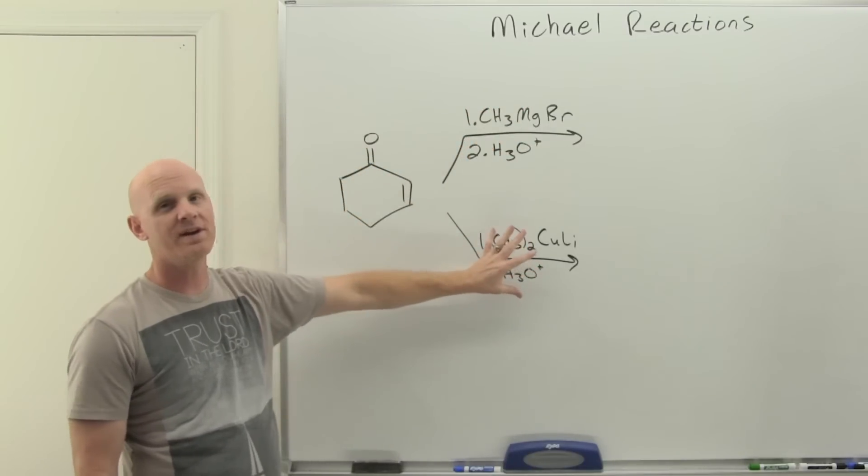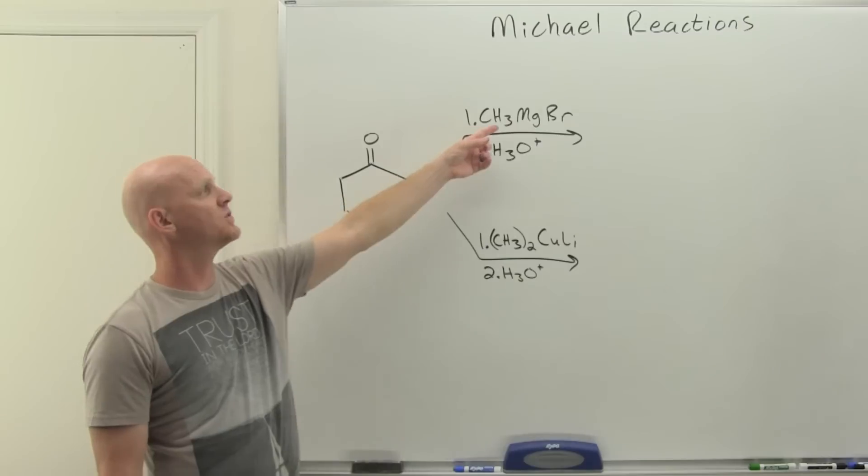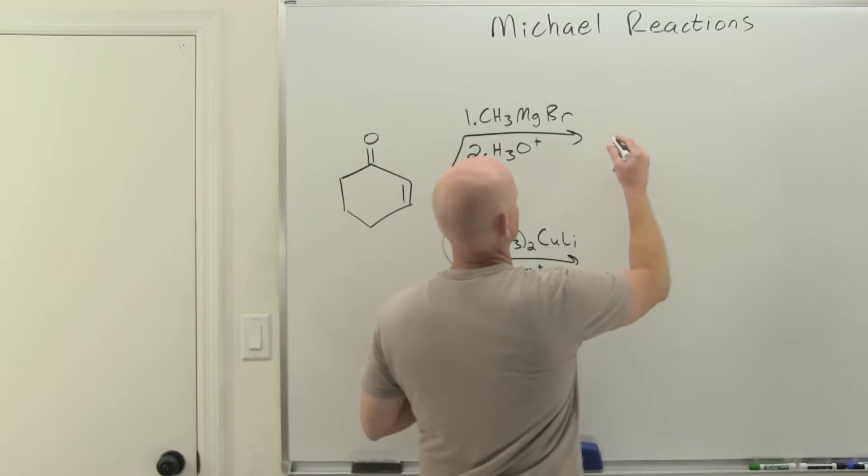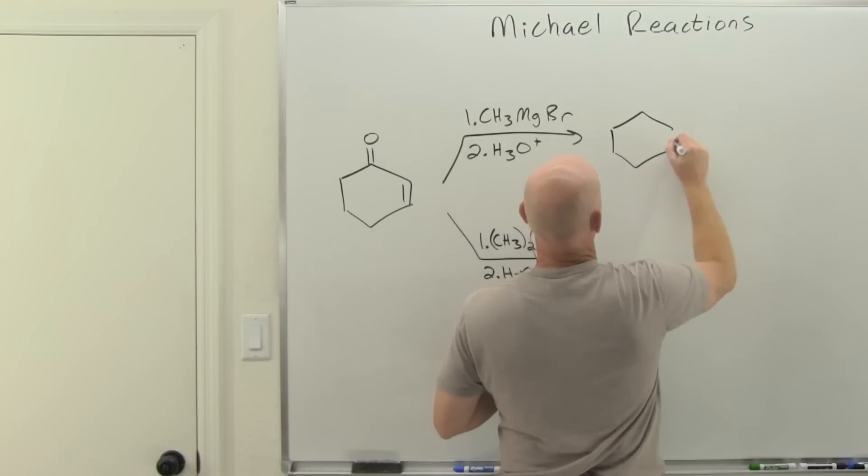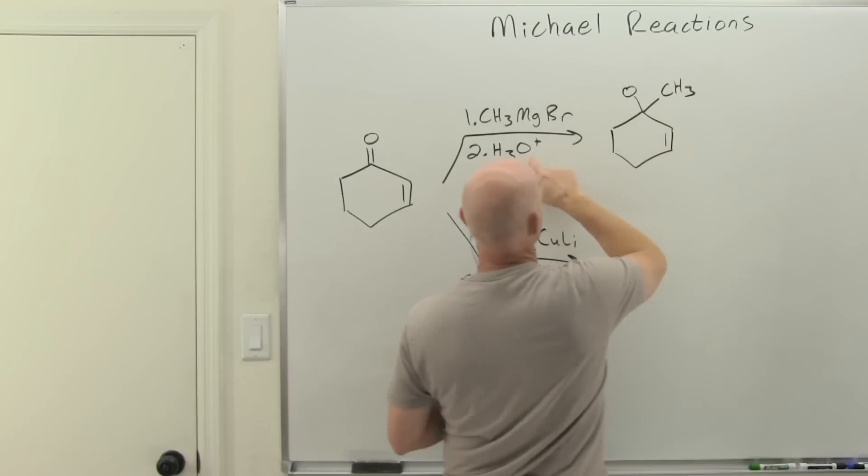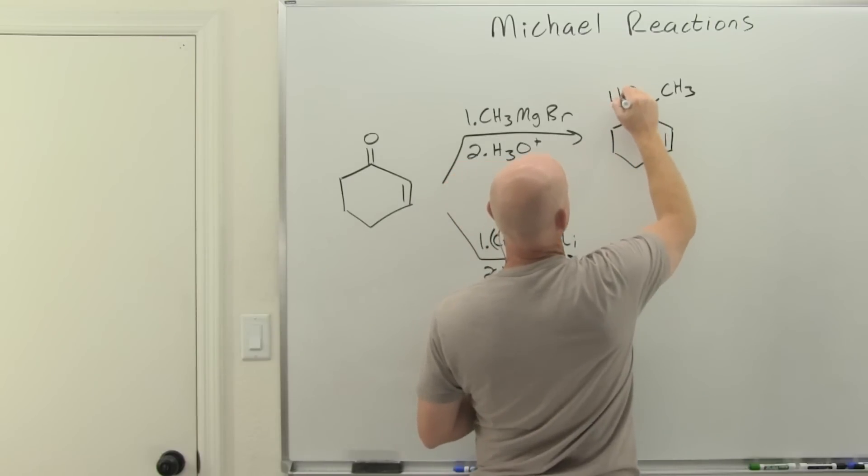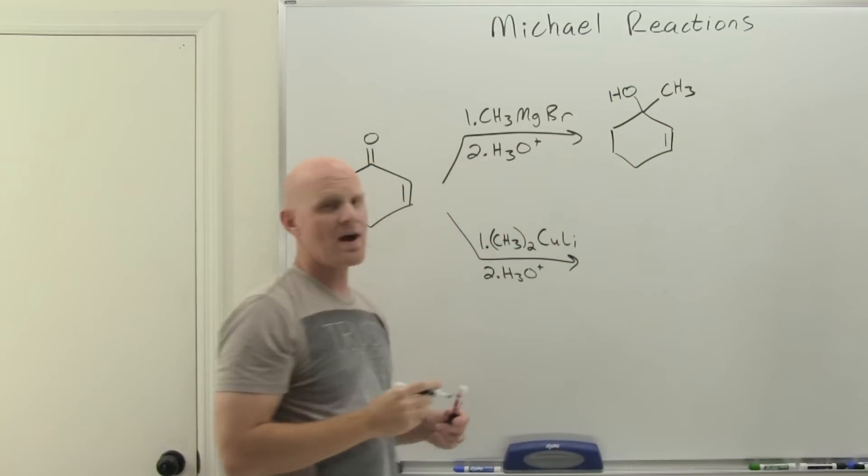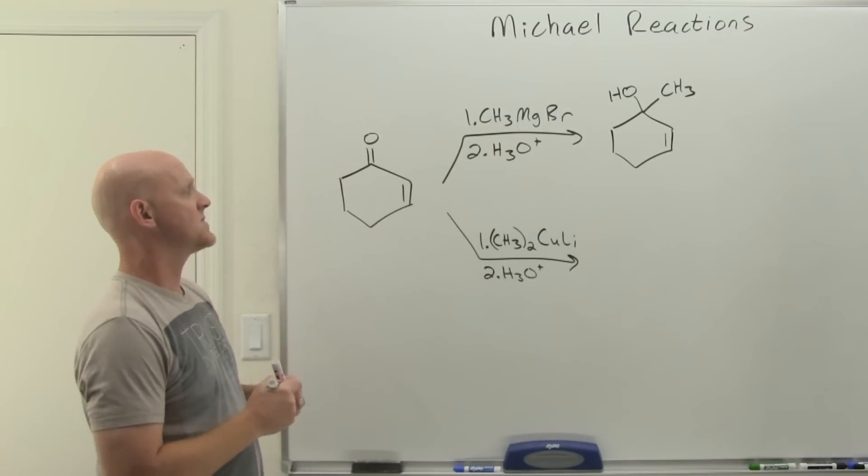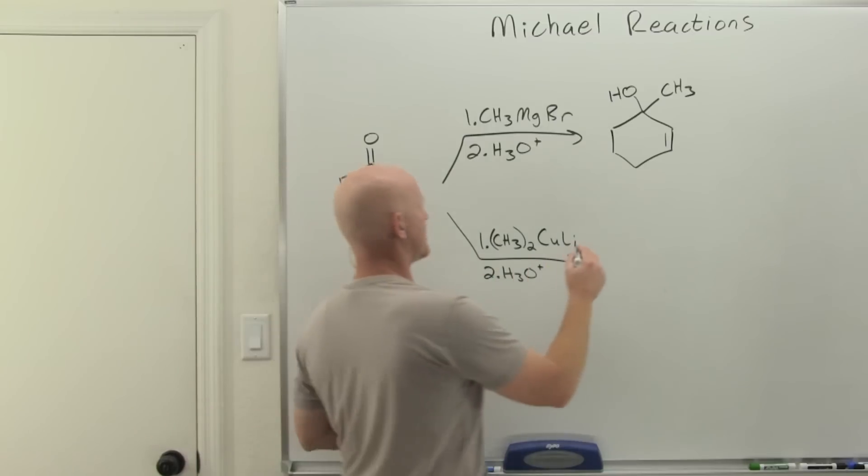A Grignard here is going to attack the carbonyl carbon, attaching your methyl group there. We had H3O+ in our acid workup step, protonates the oxygen giving you your alcohol. So typical Grignard addition—nucleophilic addition to a ketone.